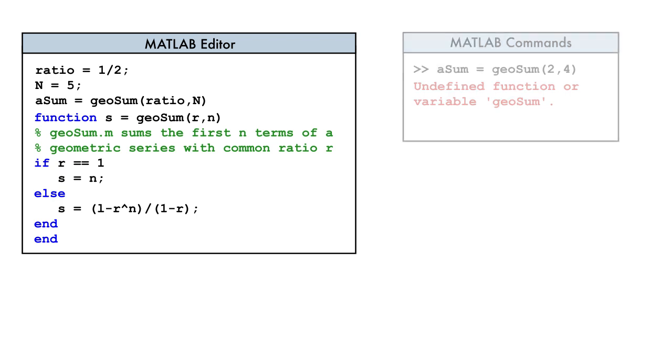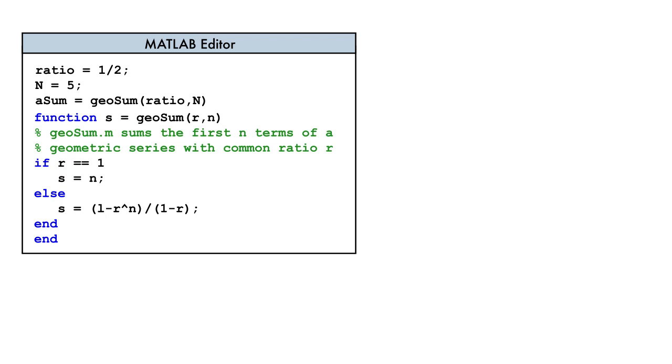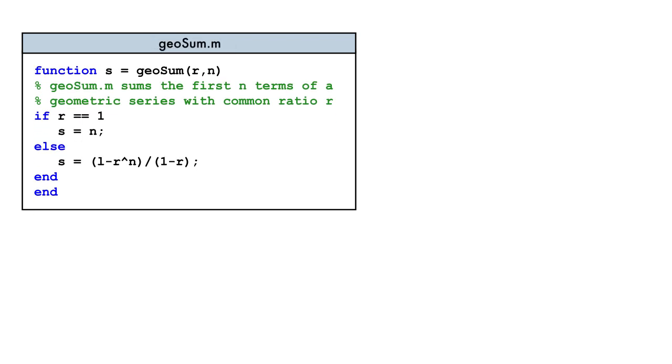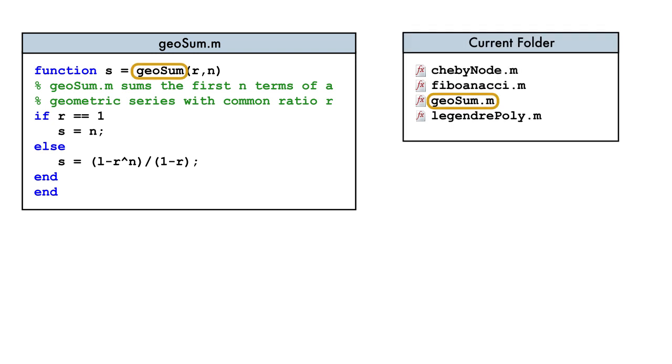In this case, we need to create a separate code file that contains only the function definition. So, let's delete the code above. Lastly, we save our file in the current folder, making sure that the file name matches the function name.